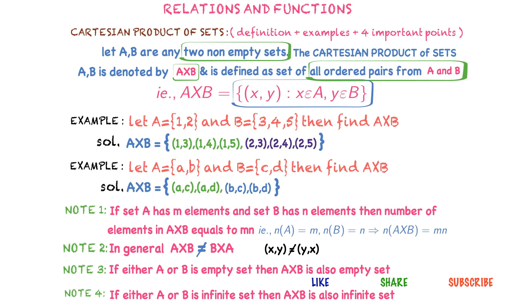So in this class, we learned the definition of Cartesian product of sets, how to calculate A cross B, and four important points. To understand the definition of relation, you must know all these things clearly. I hope you understood this class. If you like this video, please press the like button, share it with your friends, and subscribe to my channel. Thanks for watching. Bye-bye.